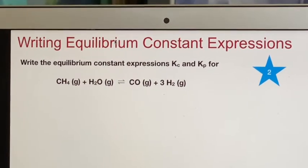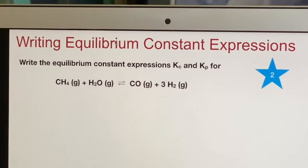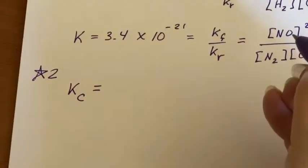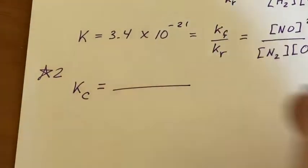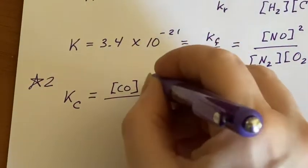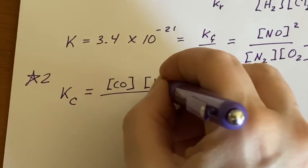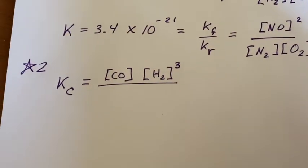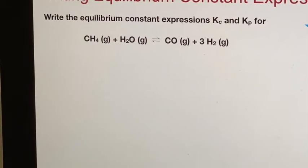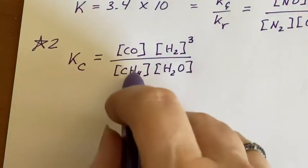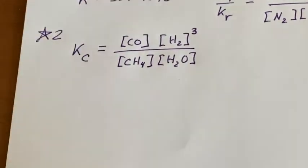So if I want to write this one down, they want me to do both K sub C and K sub P. So K sub C is just concentrations. So I'll be having the products first. I have carbon monoxide as a product and I have hydrogen gas as a product. The hydrogen gas has a three for its coefficient. And then that's going to be over the reactants, which were the methane and the water vapor. And when you go find those concentrations, put them in and you can calculate K sub C.